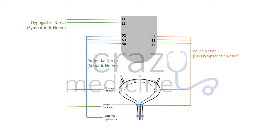First of all, the hypogastric nerve, which is a sympathetic nerve, arises from the L1-L2 segment of the spinal cord. It innervates the detrusor muscle and internal sphincter. The next is the pelvic nerve, which is a parasympathetic nerve — it also innervates the detrusor muscle and internal sphincter.